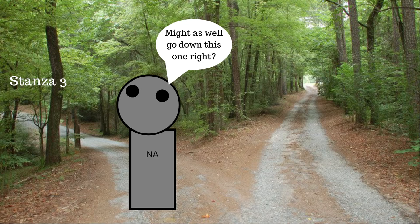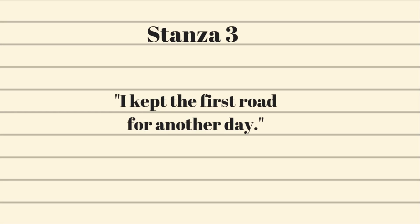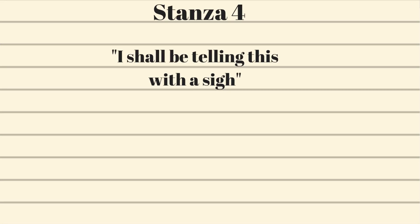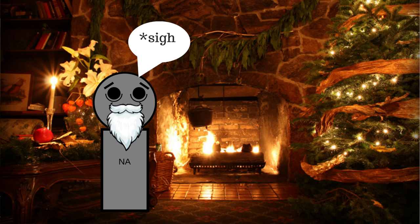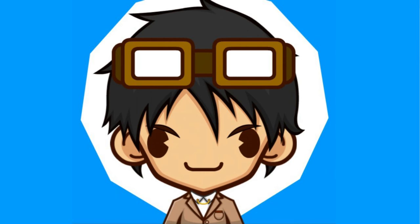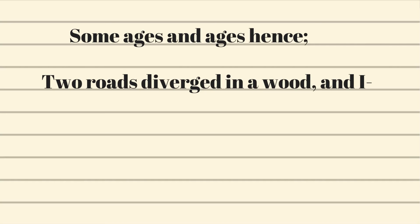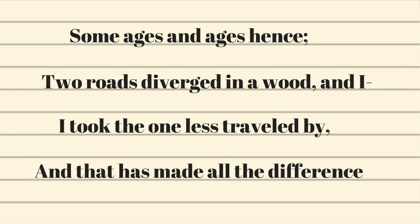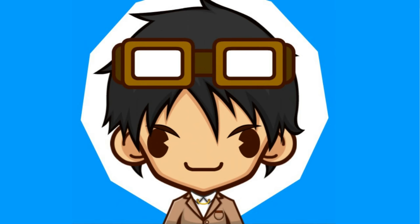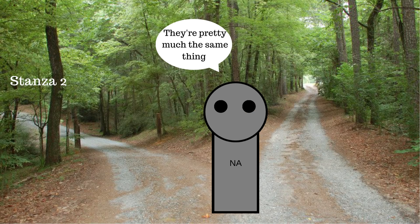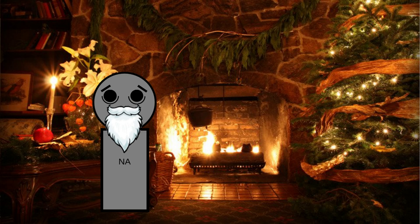In stanza three, he makes his choice to go down the second road, even saying 'I kept the first road for another day.' In stanza four, we have a time skip, and he writes 'I shall be telling this with a sigh.' He sighs — but why? It becomes a little clearer when we read the last four lines: 'Some ages and ages hence, two roads diverged in a wood, and I — I took the one less traveled by, and that has made all the difference.' In the second to last line, he's telling a lie. He says he took the one less traveled by, but we know from stanza two that the two roads were the same and equally traveled. So in other words, he's an unreliable narrator.